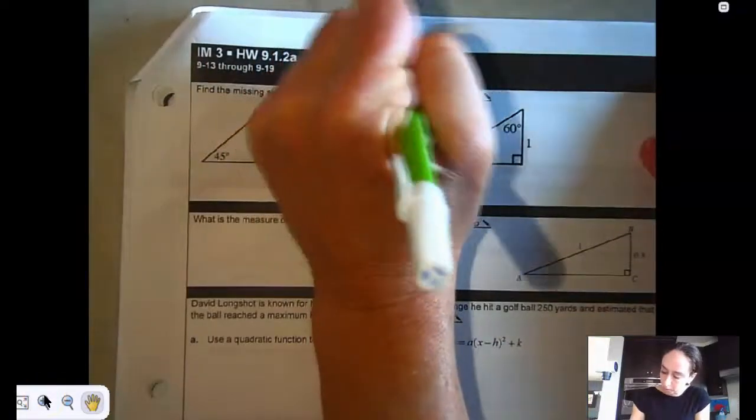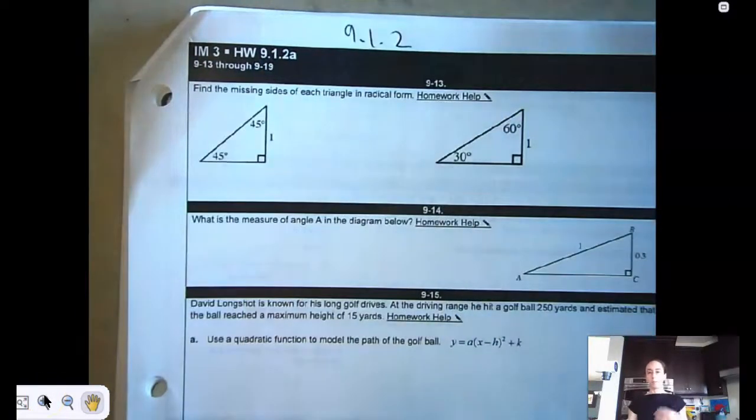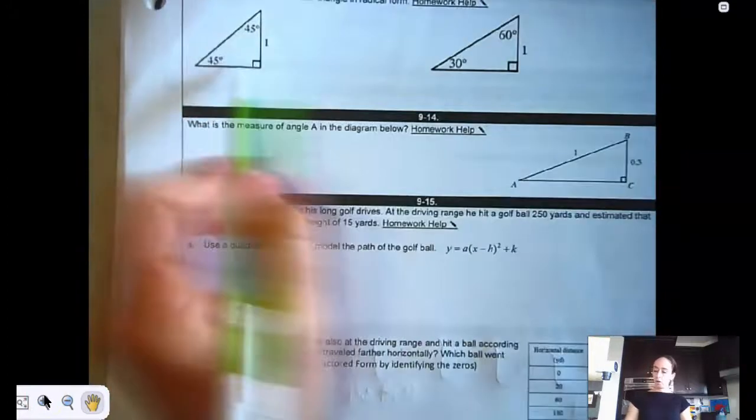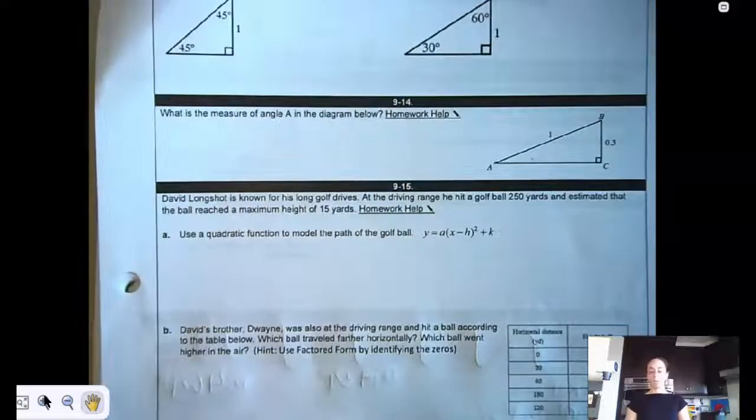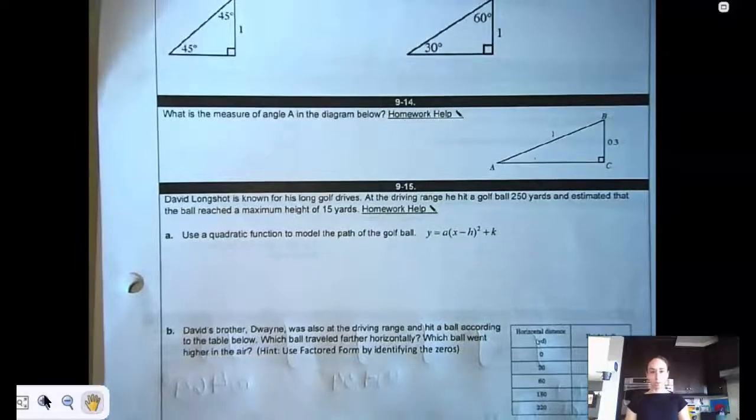So now this is considered 9.1.2. Don't worry that it says A. Remember I cut and pasted. Fill out the rest of the sides and the angles. We've done that before on the previous homework.